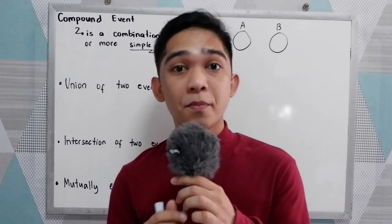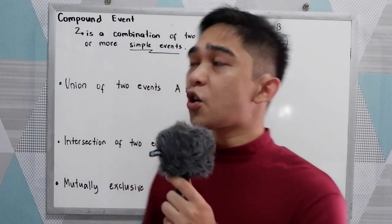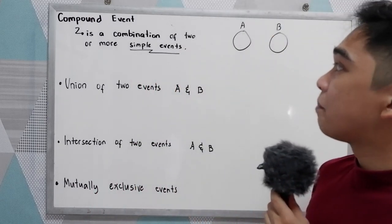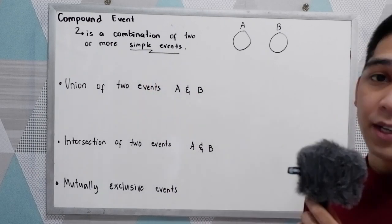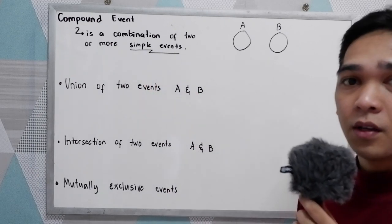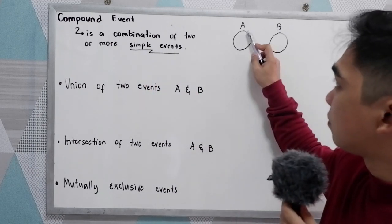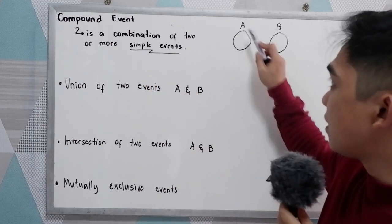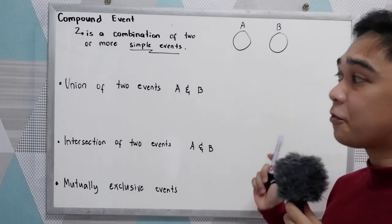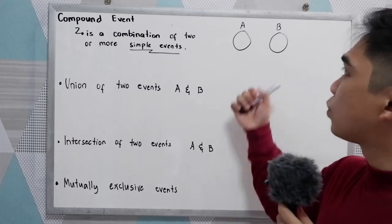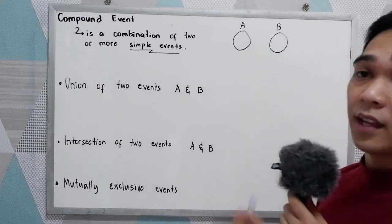Good day everyone. Today I am going to illustrate the probability of compound events. When we say compound event, it is a combination of two or more simple events. Let's say we have event A and event B, and we're going to find the relationship between the two events.